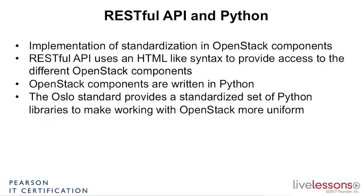Now let's move on to some other key components of OpenStack Cloud, which are RESTful API and Python. RESTful API and Python take care of the implementation of standardization in OpenStack components. RESTful API is using an HTML-like syntax to provide access to different OpenStack components. API is the application programming interface — it defines how a specific component in OpenStack can be accessed. One of the good things about OpenStack is that component access is standardized, so all components, no matter which one you are working with, are using the same API: a RESTful API.